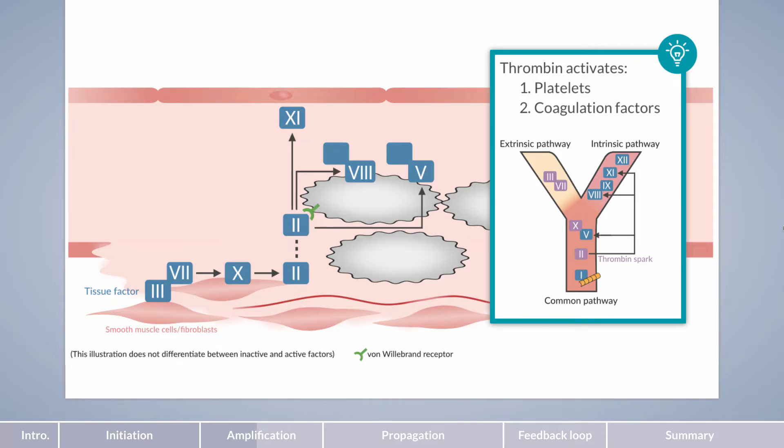Before we take a look at how coagulation further proceeds, let's have a closer look at factor VIII. In plasma, factor VIII is bound to von Willebrand factor. Once factor VIII is activated by thrombin, it results in the release of von Willebrand factor, which, in turn, binds to the receptor for von Willebrand factor and facilitates platelet adhesion.